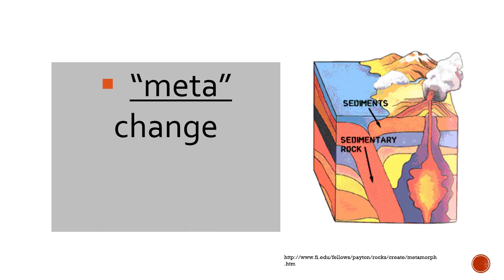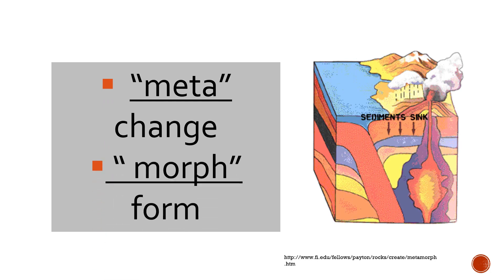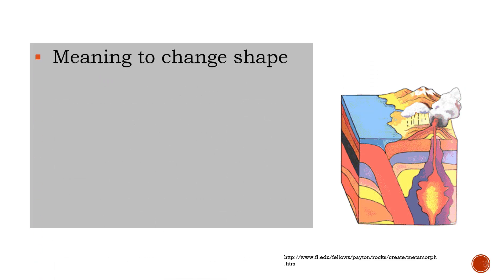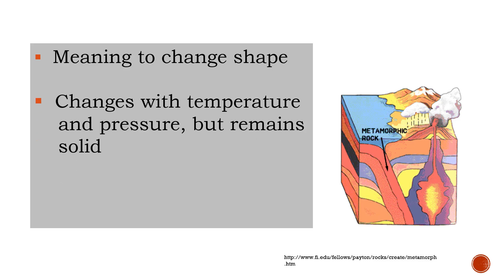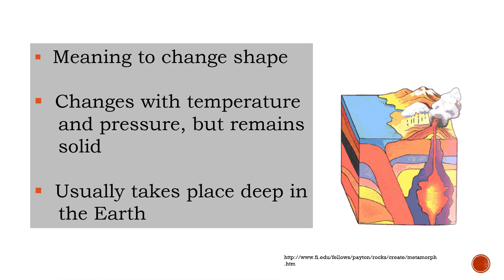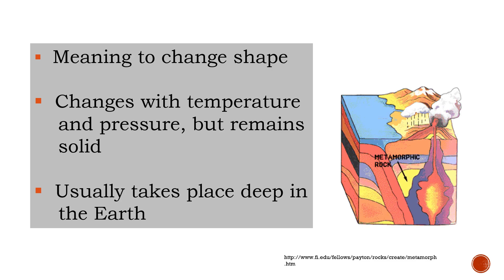The last type of rock is metamorphic rocks. The term metamorphic comes from the word 'meta,' meaning change, and 'morph,' meaning form — so metamorphic means a change in form or shape. These rocks change with temperature and pressure but remain solid. Metamorphic changes usually take place deep in the earth. Metamorphic rocks form from pre-existing rocks — either metamorphic, igneous, or sedimentary. Examples include quartzite, marble, slate, and phyllite.